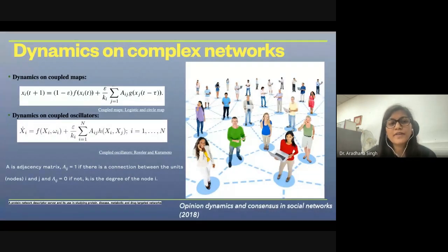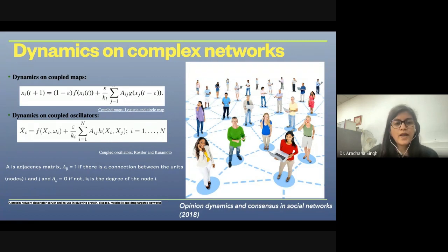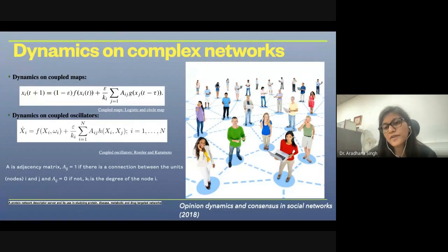I will now discuss the dynamics on complex networks. Dynamics on complex networks can be understood using coupled maps or coupled oscillators. The role of the network comes from the adjacency matrix. As an example, in a social network where people are connected through different modes of interaction, the change in opinion is the dynamics happening on this network.